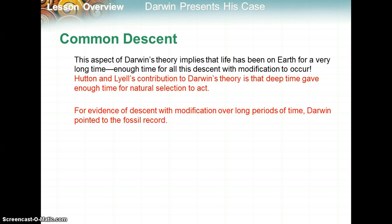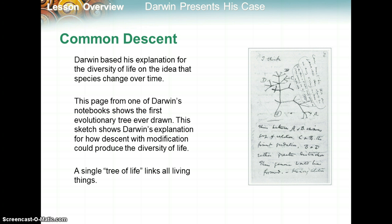According to the principle of common descent, all species — living and extinct — are descended from ancient common ancestors. For evidence of descent with modification over long periods of time, Darwin pointed to the fossil record. Darwin based his explanation for the diversity of life on the idea that species change over time. One page shown here from one of Darwin's first notebooks features an evolutionary tree he drew — a sketch showing how descent with modification could produce the diversity of life, like a collection of cladograms. A single tree of life links all living things through descent with modification from a common ancestor or ancestors.